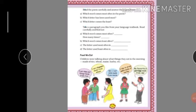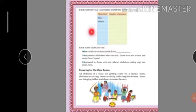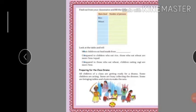Now let's open the next page, 166: 'Find out from your classmates and fill the table.' You have to write the main food name and the number of persons. Write foods like rice, wheat, maize, barley, and ragi. Ask your friends — if you have 10 to 15 friends, you can ask how many like rice, how many like wheat, and complete the table.